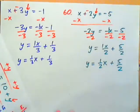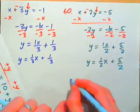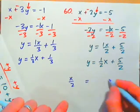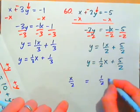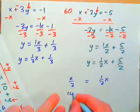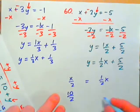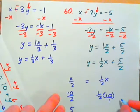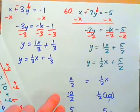Just as a reminder: X over 2 is the same as 1 half times X. For example, 10 over 2 equals 5, and 1 half times 10 equals 1 half times 10 over 1, which is also 5.